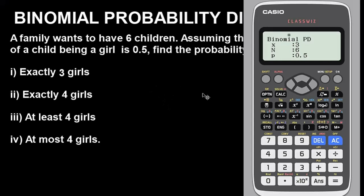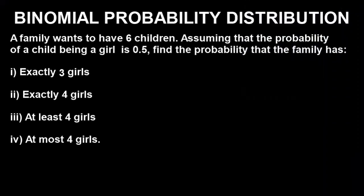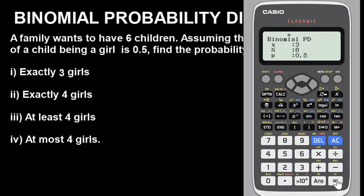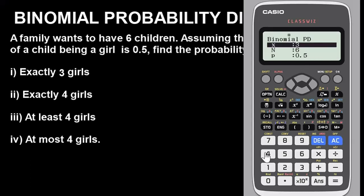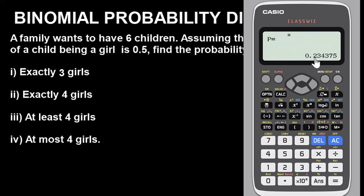Having entered X=3, N=6, and P=0.5, press Enter to get the probability that the family has exactly three girls. The result is 0.3125. Now for exactly four girls, go back and change X to 4, then press Enter. The result is 0.234375. It's as simple as that.